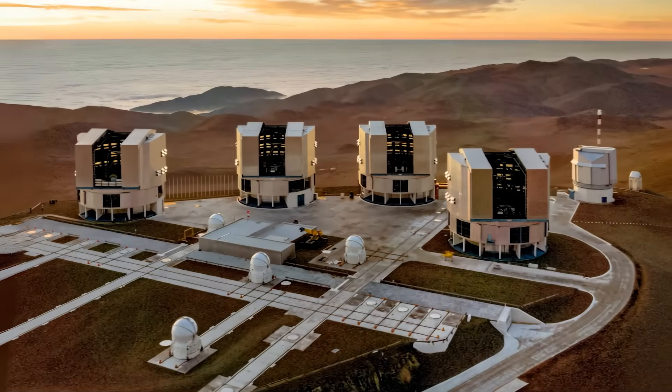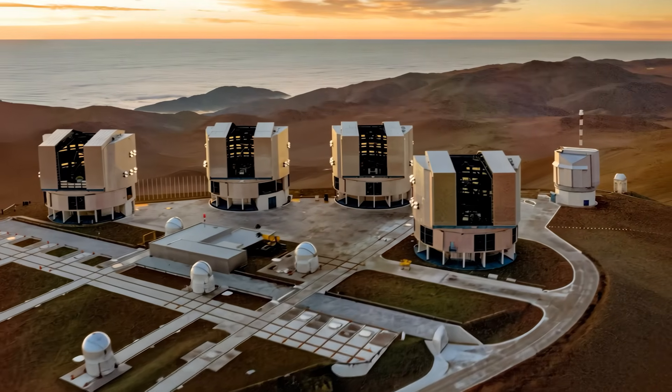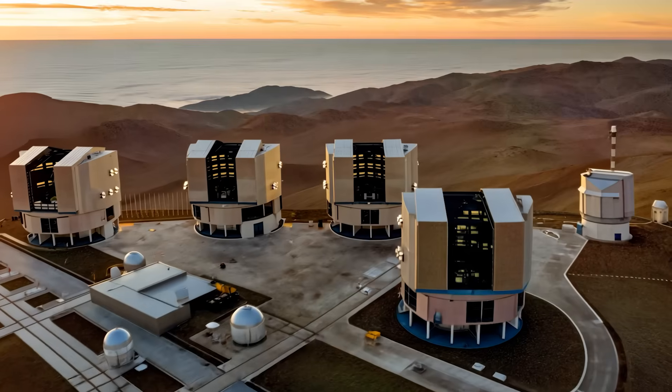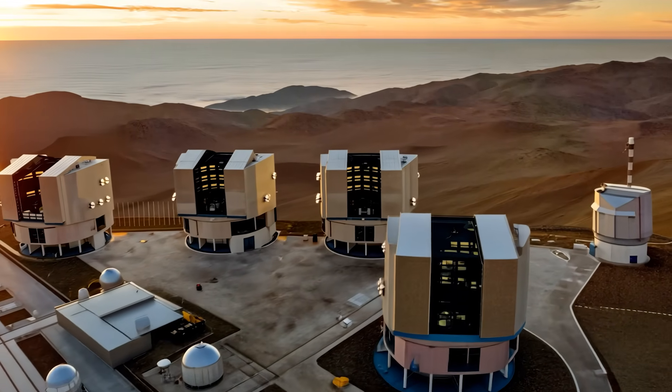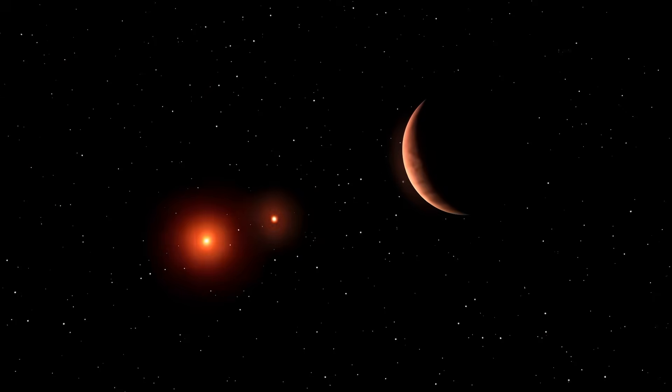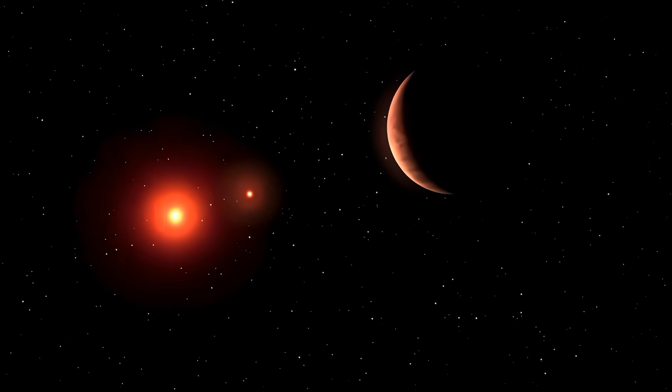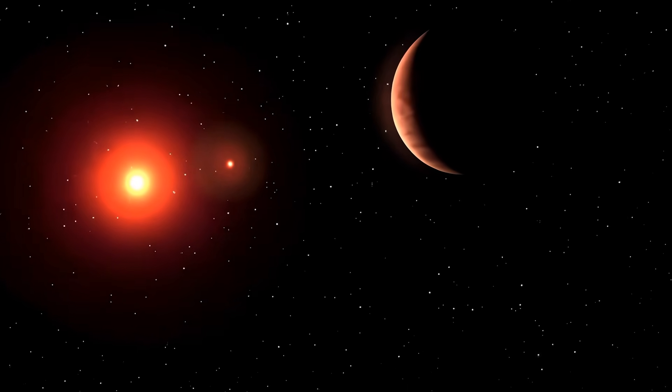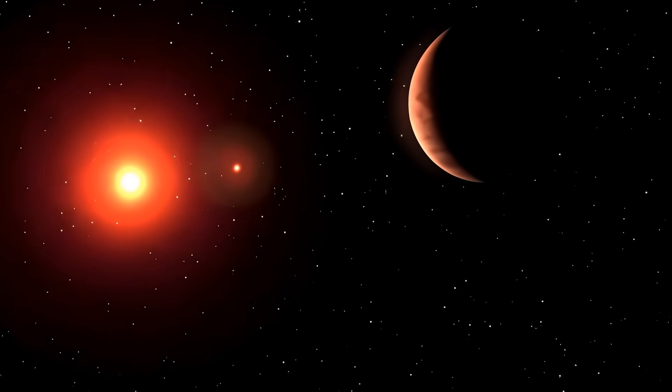The international team confirmed their finding using the UVAS instrument on the Very Large Telescope in Chile, which allowed them to precisely measure the orbital dynamics over multiple years. While previous Tatooine-like worlds have been discovered since Kepler-16b was first found in 2011, none have shown this perpendicular orbital configuration.